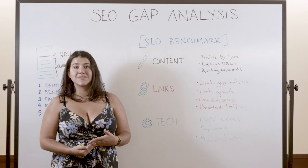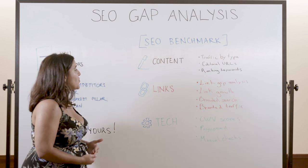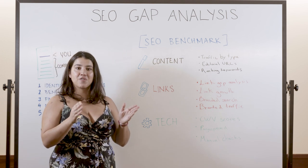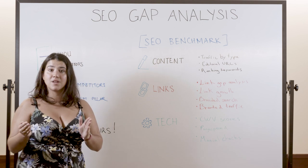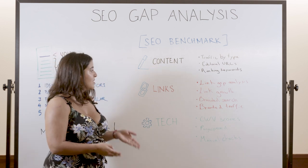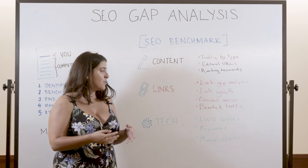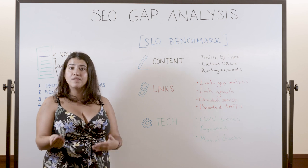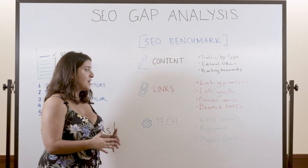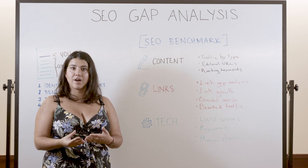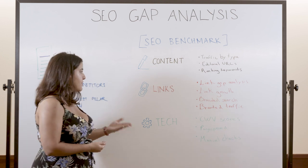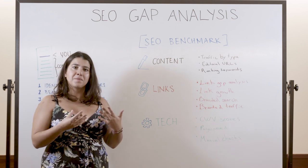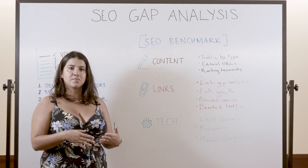Then we're going to be looking at links. We're going to begin with a link gap analysis — that is, we're going to look at how many links your competitors have and how many referring domains are pointing to your competitors. Then we're going to use this to measure link growth. We're going to look at how many links your competitors had 6 months ago, or 12 months ago if your market is a little slower, and we're going to get a percentage of growth out of that. That's going to indicate whether your search market is very aggressive with link building and you need to make an effort to keep up, or it's a little bit more relaxed.